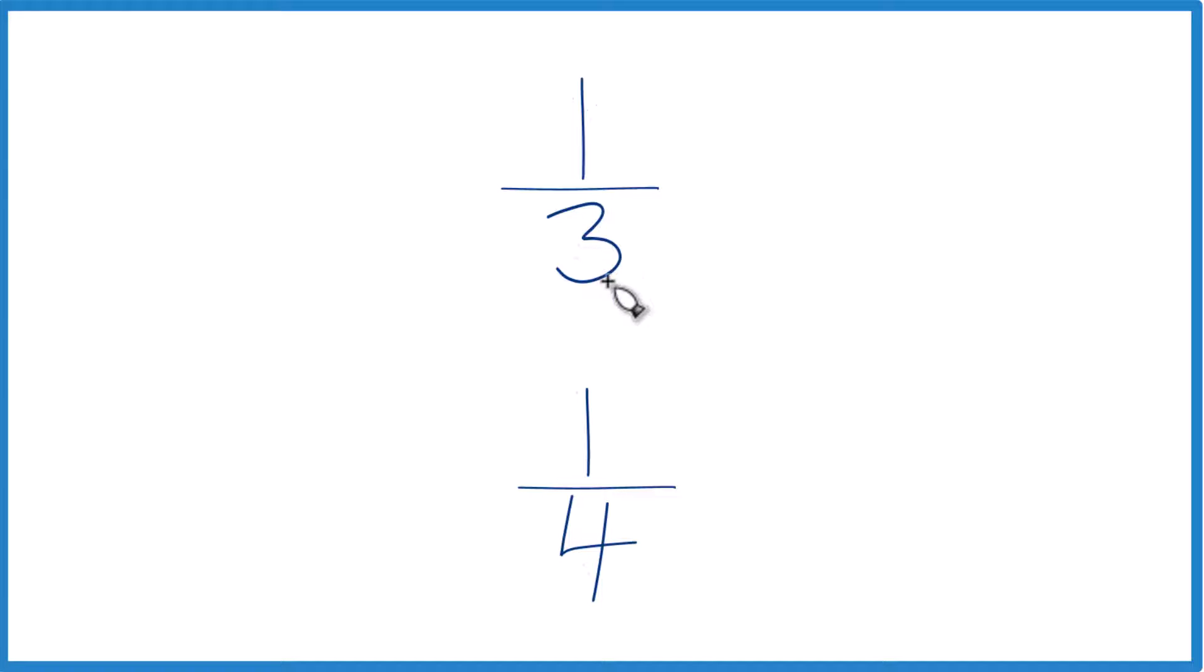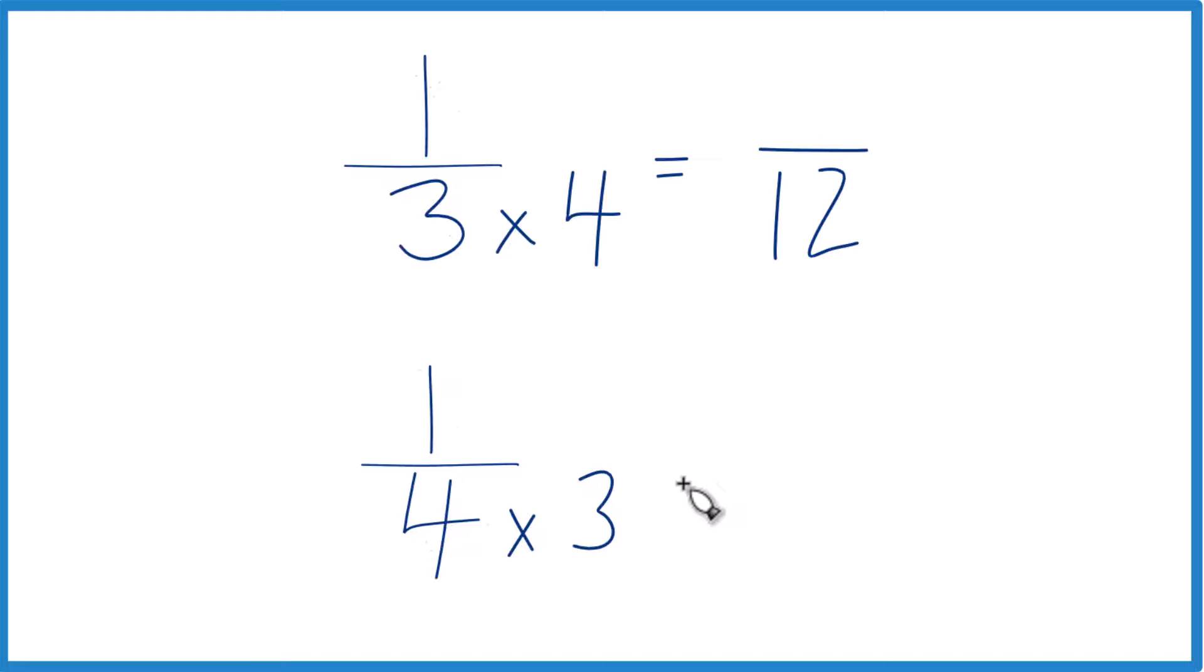How about three times four? We say three times four. That gives us twelve. Down here we could say four times three. That gives us twelve as well.